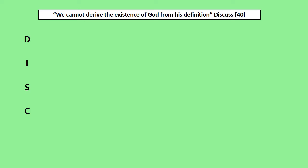Scholars: in my essay I'm going to look at Anselm, Aquinas, Gaunilo, and Kant. You could also look at Descartes. The implications of this question are: does the Ontological Argument work, and is it therefore a good reason to believe in God? For my conclusion, I'm going to back Kant and say the statement is correct, because existence cannot be a predicate — in other words, existence cannot be part of the definition of who God is.